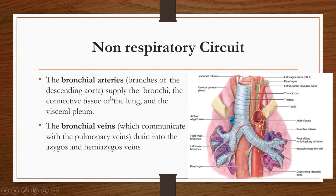The non-respiratory circuit is not involved in gas exchange. There are arteries supplying the bronchi, the connective tissue of the lung, and the visceral pleura. The lung is supplied by the bronchial artery. Bronchial arteries are branches of the descending thoracic aorta, and they supply the bronchi, the connective tissue of the lung, and the visceral pleura.